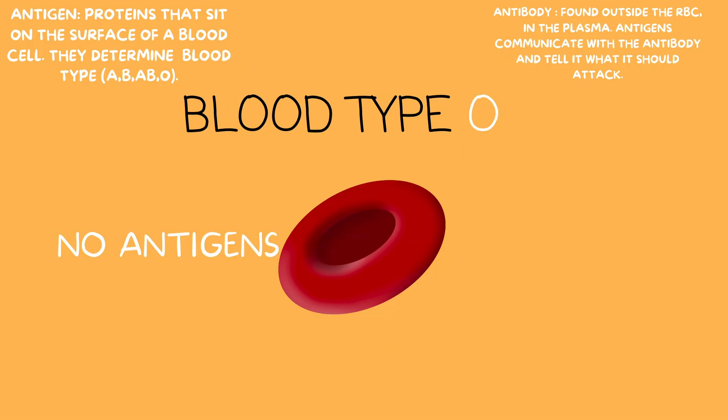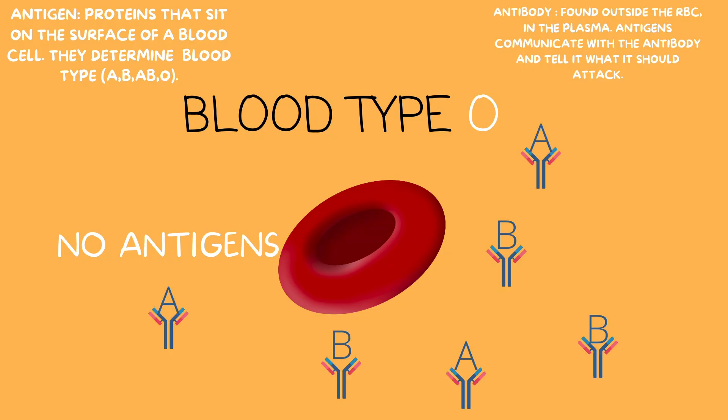In blood type O, this blood has no flags — it represents no one — which means it fights everyone. Blood type O has no antigens, but it does have an army of antibodies to fight against everyone, meaning fighting against both A and B. So if A or B comes around, blood type O is going to fight against it.